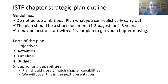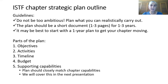The parts of the plan will include: one, the objectives; two, the activities; three, the timeline; four, the budget. And then there's another component on supporting capabilities — the capability statement. The plan should closely match what your chapter capacities are, such as the members' knowledge and skills. We will talk about that in the next presentation.